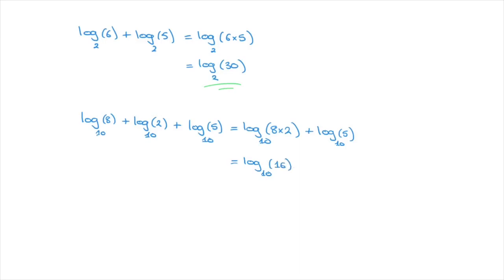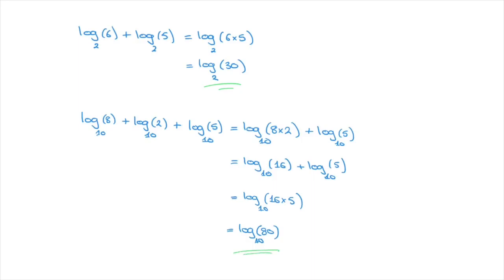This equals log base 10 of 16 plus log base 10 of 5. We now have two logarithms being added, both written in the same base 10, so we use the rule again. This equals log base 10 of 16 times 5, which is log base 10 of 80. And there we go — we've just simplified this logarithmic expression. And so that's how the addition rule for logarithms works. And that's it for this tutorial.